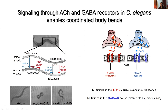In C. elegans, signaling at the neuromuscular junction isn't just controlled by excitatory cholinergic signaling — it's also regulated by inhibitory GABAergic signaling. Cholinergic signaling causes contraction of the body wall muscles on one side of the body, while inhibitory GABAergic signaling results in relaxation of muscles on the opposing side. This is what enables the coordinated locomotion seen in C. elegans. Mutations in either the acetylcholine receptor or GABA receptor cause uncoordinated locomotion as well as altered sensitivity to levamisole.